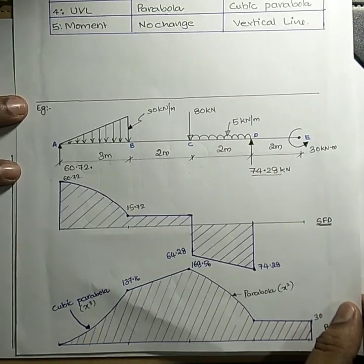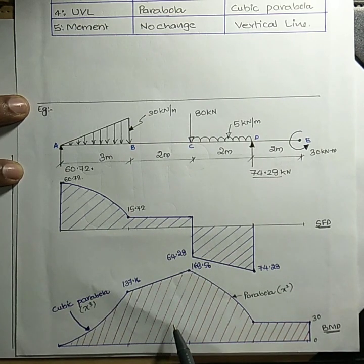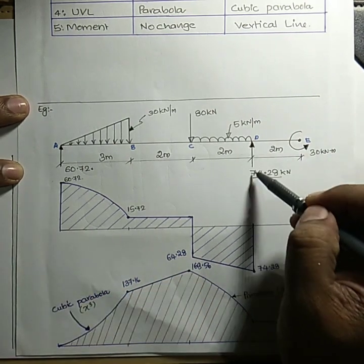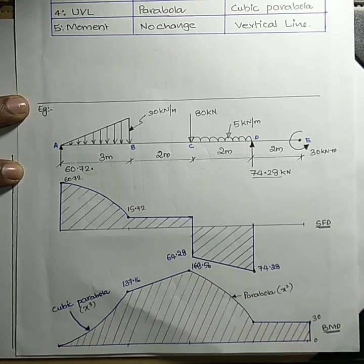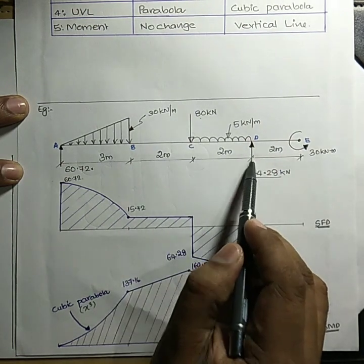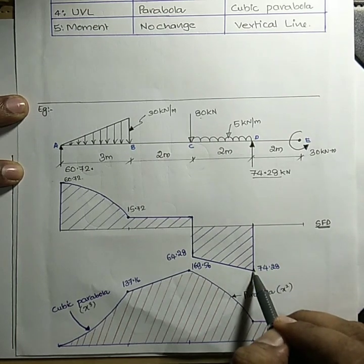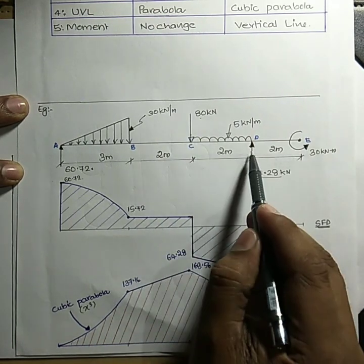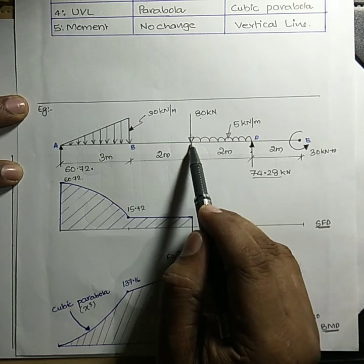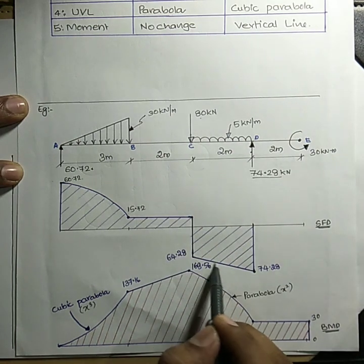This shear force diagram and bending moment diagram figure illustrates the variation. You can see upward forces and downward forces at various points. Wherever you have a force or point load, the shear force line will be vertical. Similarly, where there is a UDL acting from C to D, the shear force diagram will be an inclined line.